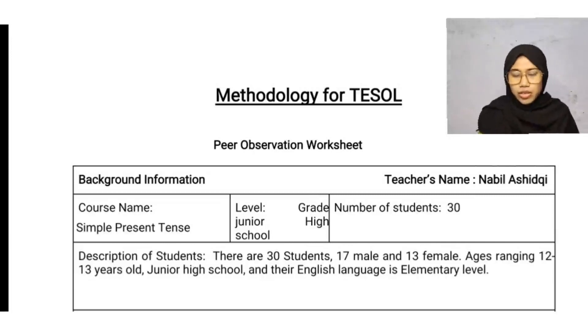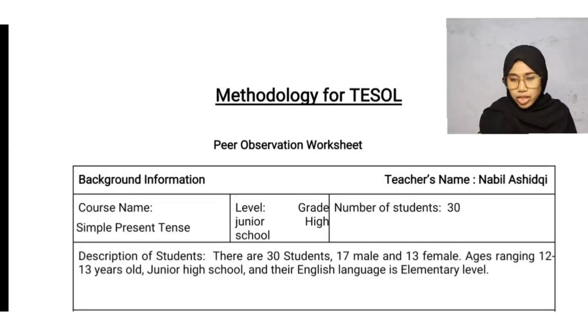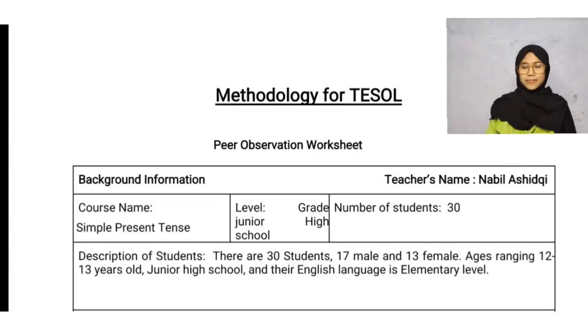Next, ranging — they are 12 and 13 years old in junior high school and their English language level is elementary.